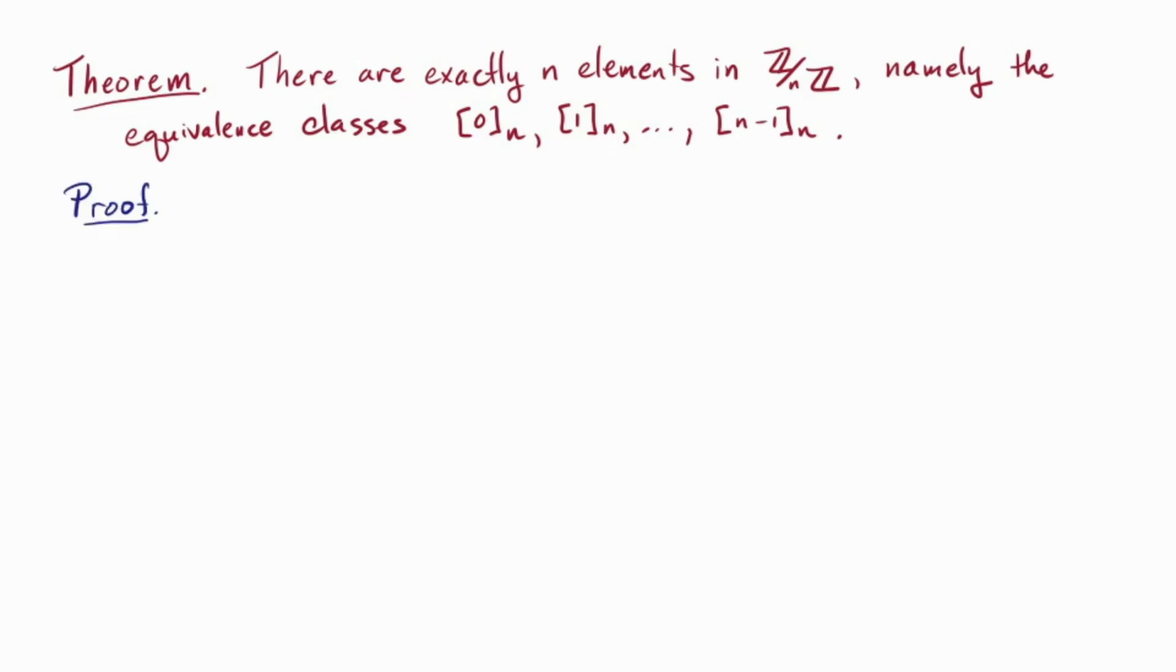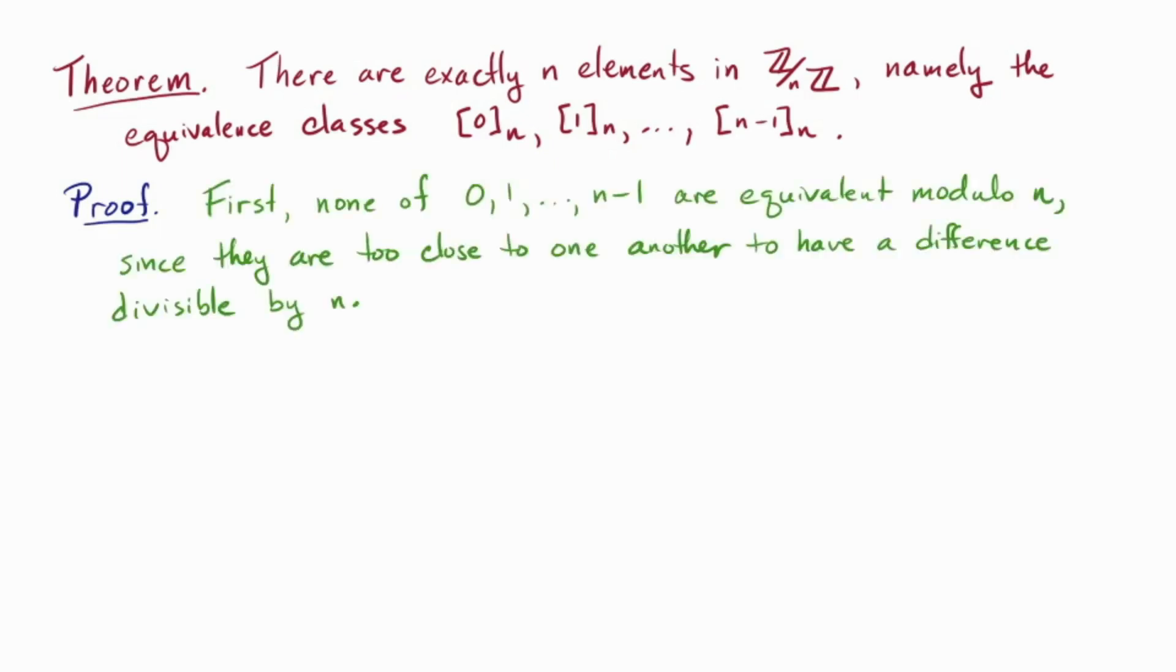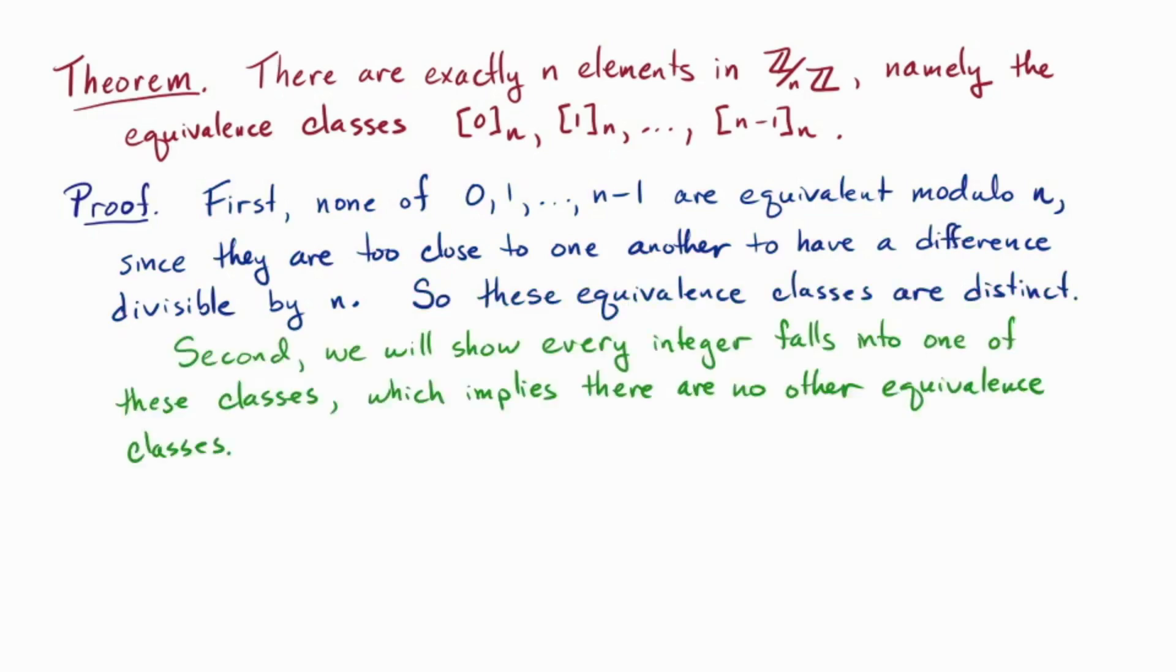Let us give a proof. We'll just give a short proof here, which depends on something called the division algorithm. First, none of 0, 1, up through n minus 1 are equivalent, like equivalent to each other mod n, since they're too close to one another to have a difference divisible by n. So these equivalence classes are distinct. Second, we'll show that every integer falls into one of these classes, which implies that there are no other equivalence classes. This is simply because there are no integers left over, if they all fall into the classes we have already.